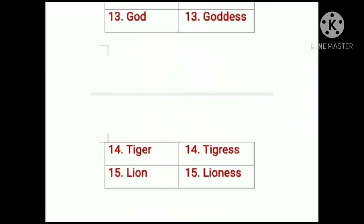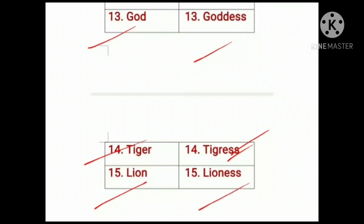God — masculine, goddess — feminine. Tiger — masculine, and when changing into feminine gender, tigress — feminine. Lion — masculine, lioness — feminine. So by adding E-double-S after the masculine noun, we get the feminine form.